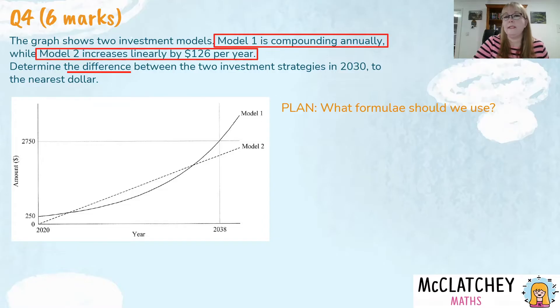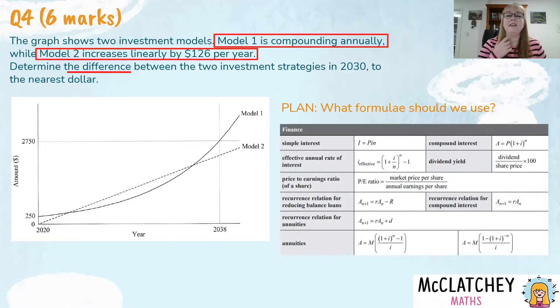We're going to have to work out somewhere where 2030 is and then work out how much model one is worth at that point, how much model two is worth at that point and what is the difference between the two to the nearest dollar. Okay so that's our key information. Question is what do we do now? We need to plan. So let's have a look at our formula sheet in Queensland and have a think about what kind of formulas on here will help us. Well if we have a look, it's not an annuity. There's no regular payment going into model one at all. So we can basically ignore the bottom few rows and then we need to really only consider this top row. Simple interest for model two compound interest for model one. So once you've identified those formulas it makes the rest of the problem a lot easier.